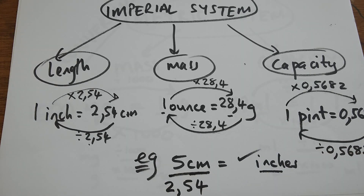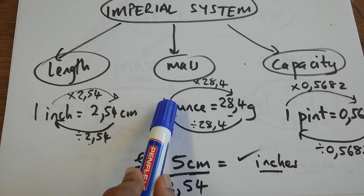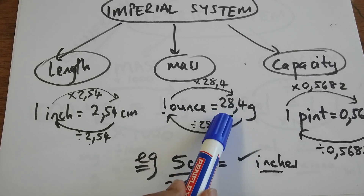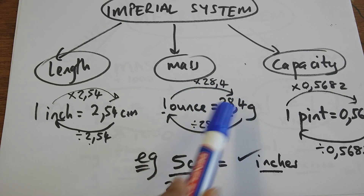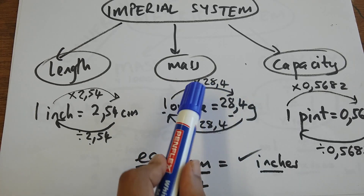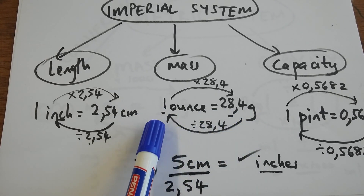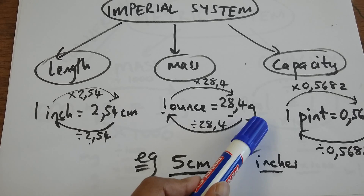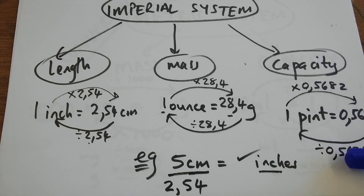Under mass, from our conversion table: one ounce is equivalent to 28.4 grams. When I convert from ounces into grams, 1 multiplied by 28.4 gives 28.4 — so going from ounces into grams, I multiply. When I go in the opposite direction, 28.4 becomes a one, so 28.4 divided by itself gives one, which means when converting from grams into ounces, I divide.